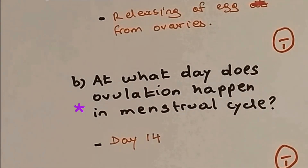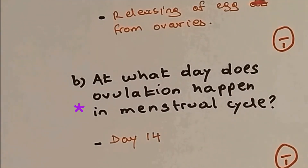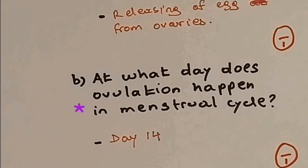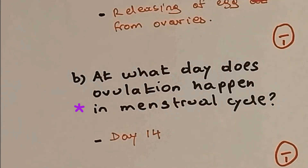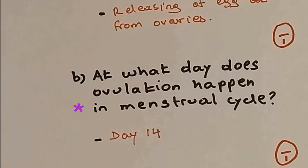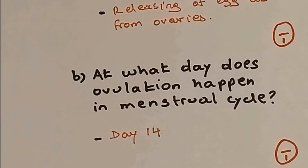In the middle of the menstrual cycle, which is day 14, the egg is released — this is called ovulation.